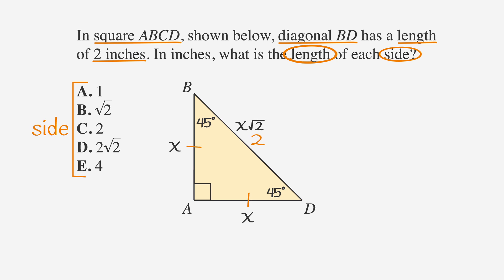In the 45-45-90 triangle in this problem, the x times the square root of 2 side equals 2. Now we can find the length of each leg by solving for x. Since x times the square root of 2 equals 2, we can divide each side of the equation by the square root of 2 to get x equals 2 over the square root of 2.